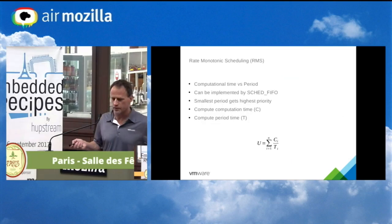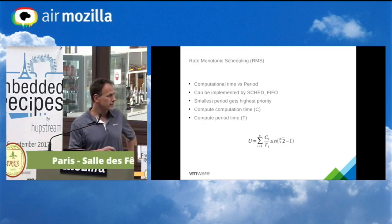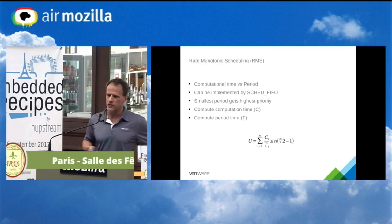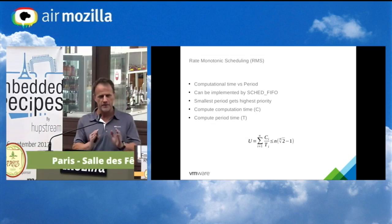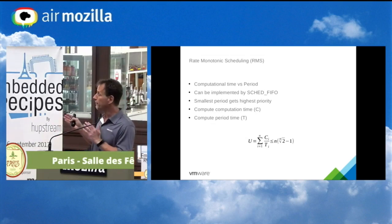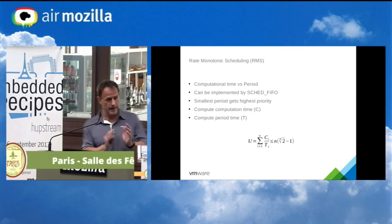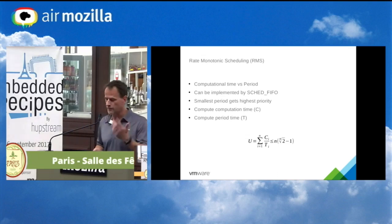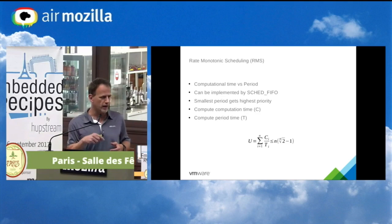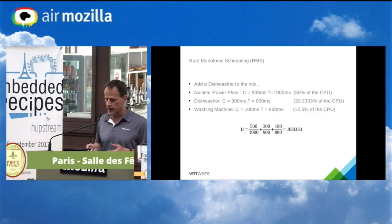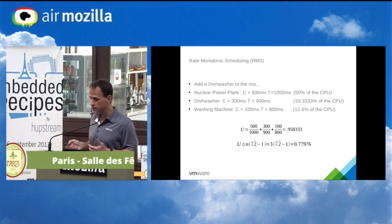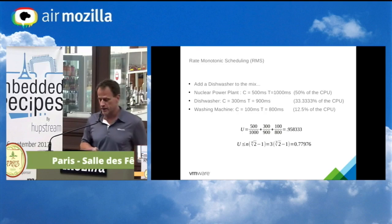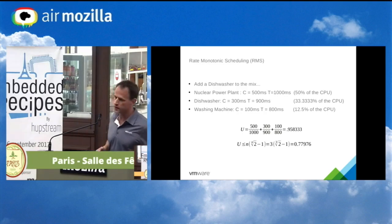But how did this happen? We had less than 100% utilization. Unfortunately, with rate monotonic scheduling, the best guarantee is given by this formula: N times 2 to the power of 1/N minus 1, where N is the number of tasks. With our 95.8% utilization and three tasks, we only guarantee up to 77.9%. Taking the limit as N approaches infinity, that formula turns into the natural log of 2 — approximately 69.3% — which is the best rate monotonic scheduling can give you.